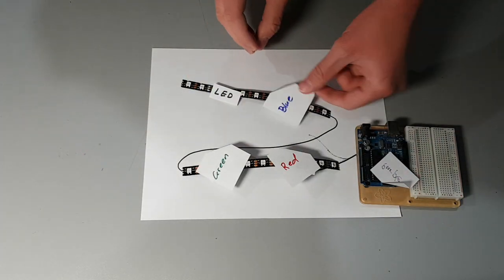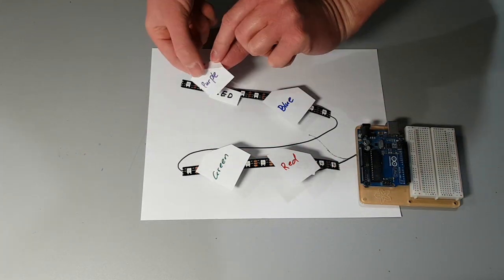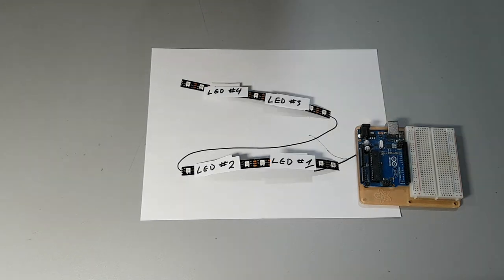If we number each LED at this point, we find that the numbers are no longer sequential at these branches or nodes, and as a result, the code will need to reflect this.